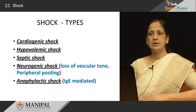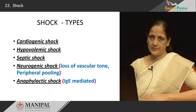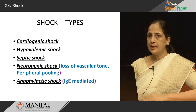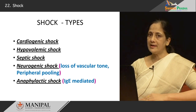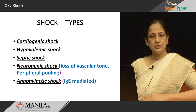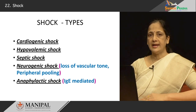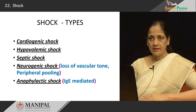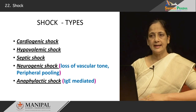Now let us look at the different kinds of shock. There are basically five main types: cardiogenic shock, which occurs with various cardiac diseases; hypovolemic shock, when there is loss of blood volume; septic shock, when there is bacteremia; neurogenic shock, when there is loss of vascular tone and peripheral pooling of blood; and anaphylactic shock, which occurs in hypersensitivity and is IgE-mediated. We will focus on the pathogenic mechanisms involved in cardiogenic shock, hypovolemic shock, and septic shock.